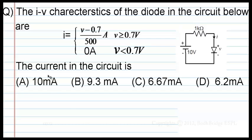Here, he has given the characteristics of the diode as I equal to V minus 0.7 by 500 when V is greater than 0.7. V is this voltage.